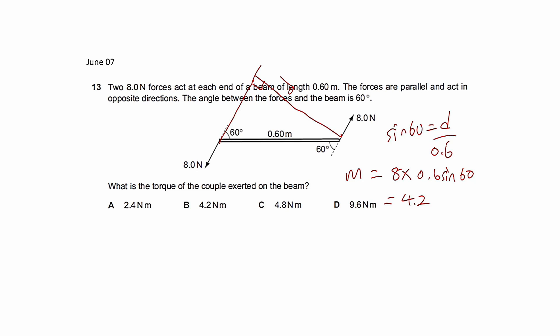So remember, to find the torque of the couple, you cannot simply take 8 multiply by 0.6, because the formula for the torque is the product of one of the forces and the perpendicular distance between the two. So that means you can extend the line of action of the force backwards, and then you can draw this perpendicular distance.